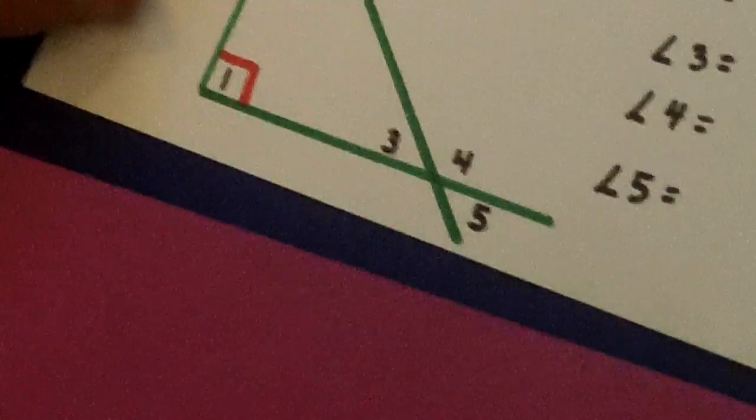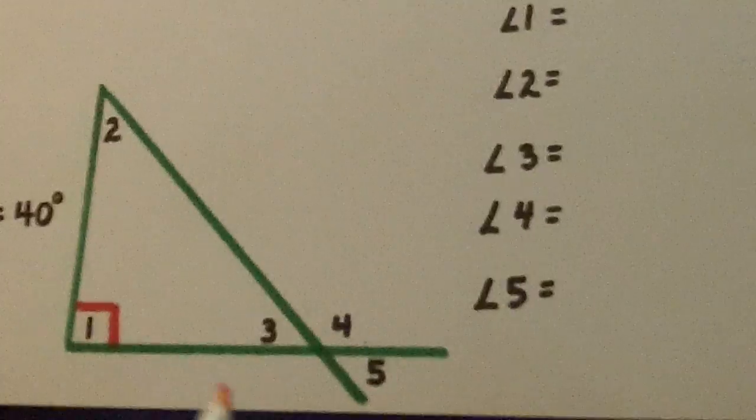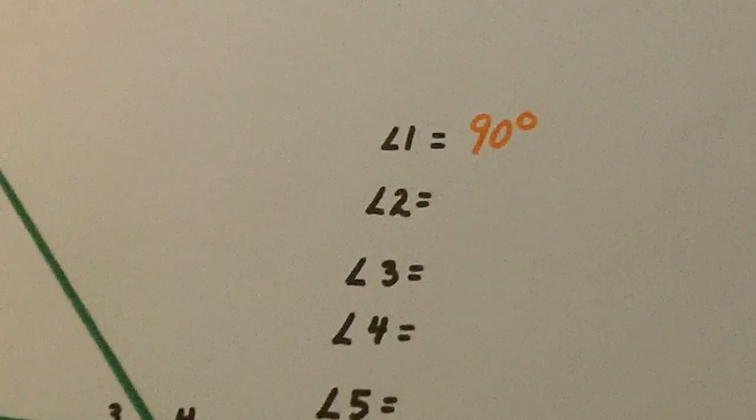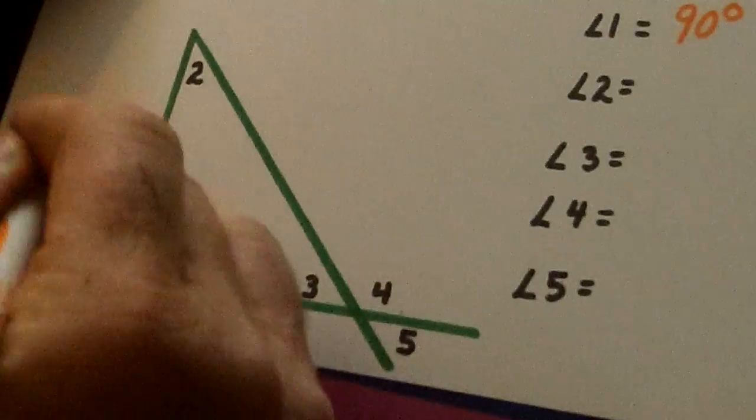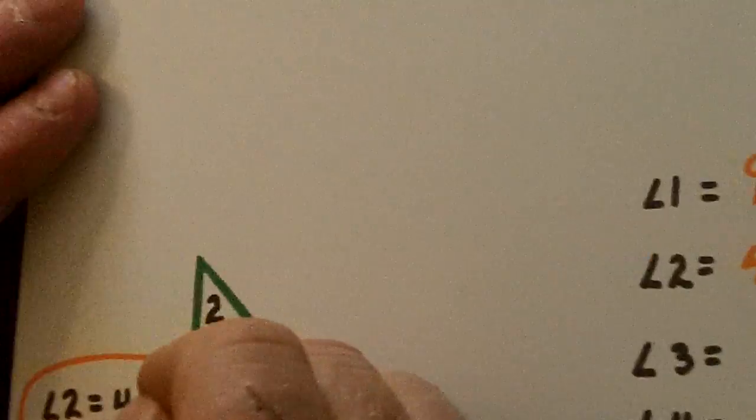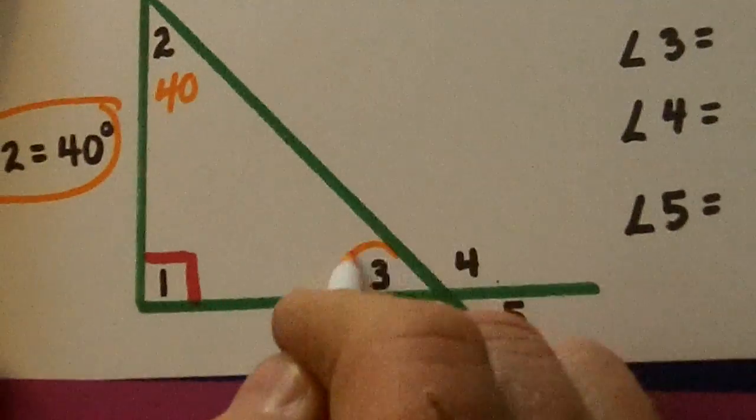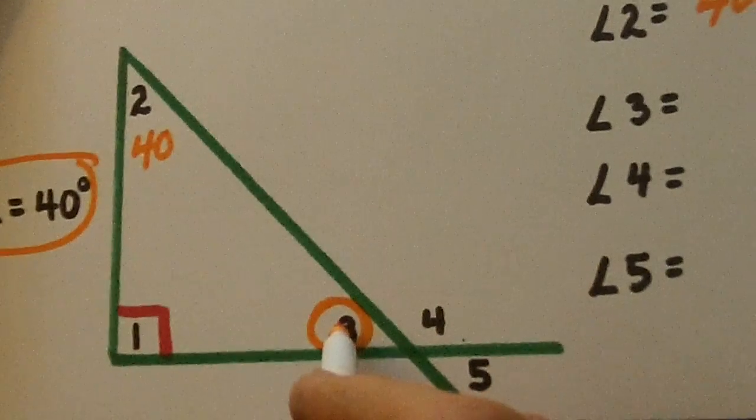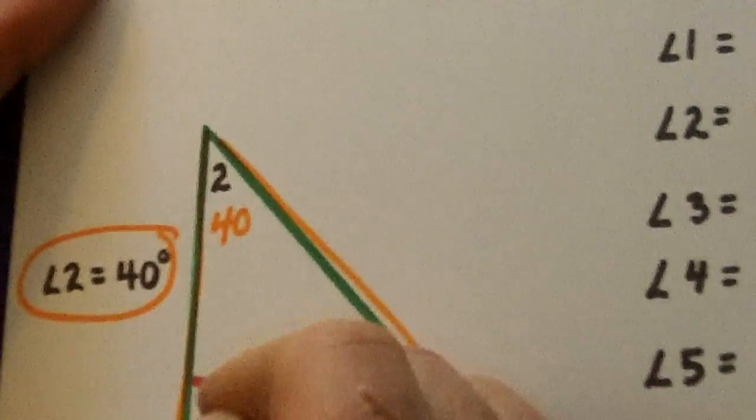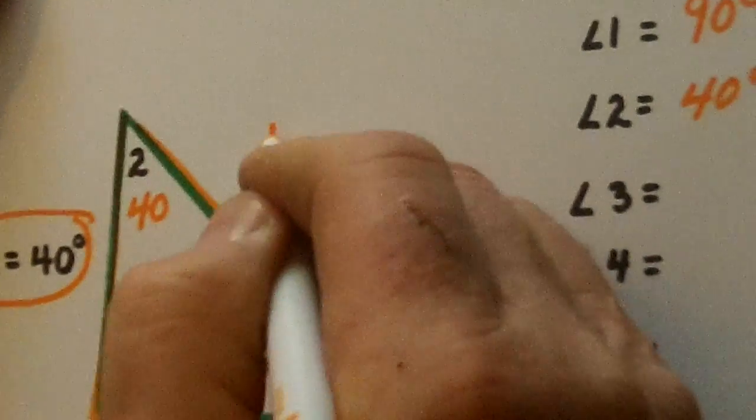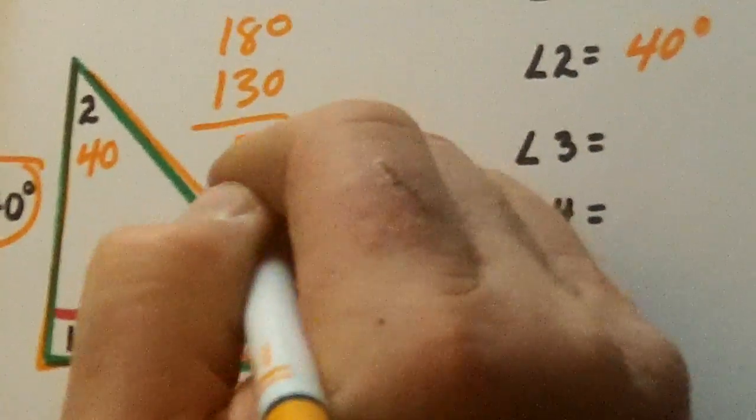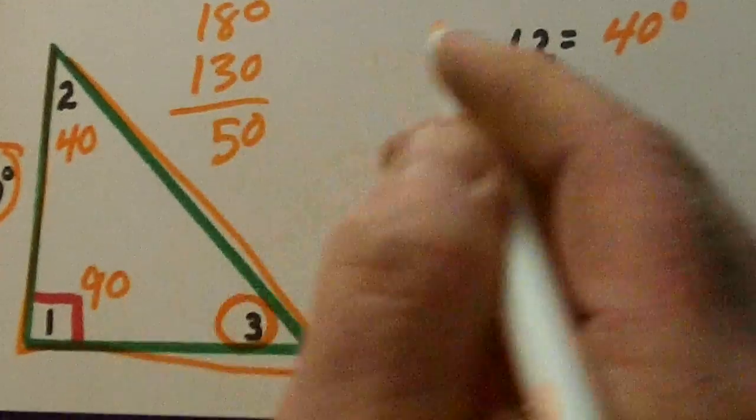Now let's go down to this one. Angle one is a right angle, so it's 90 degrees. Right here it says angle two is 40 degrees. Now watch this. Three is the other inside angle of the triangle. So if this is 90 and this is 40, that's 130. Inside degrees are 180. So angle three is 50 degrees.